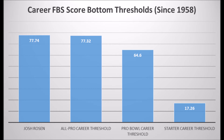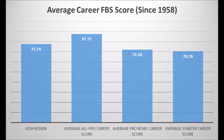The only question mark realistically is when it comes to the averages — when you look at Josh Rosen, he doesn't quite hit the average score for an All-Pro Potential quarterback since 1958. But he does hit a Pro Bowl career score and he does hit a starter career score. He hits the FBS stat score that he needs to hit in terms of a Pro Potential guy and hits all the bottom-end thresholds, with the only real question mark being All-Pro Potential averages.